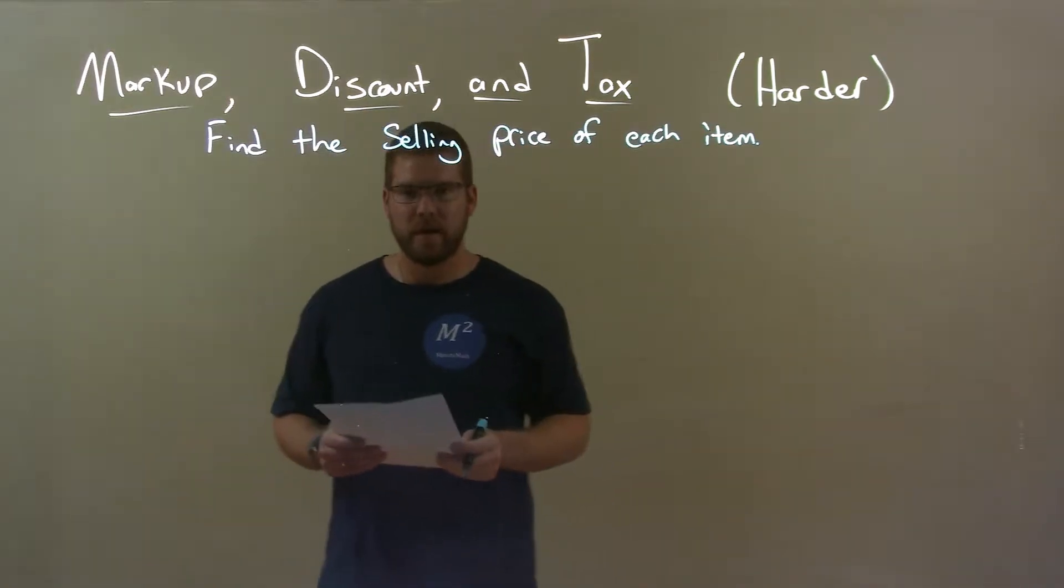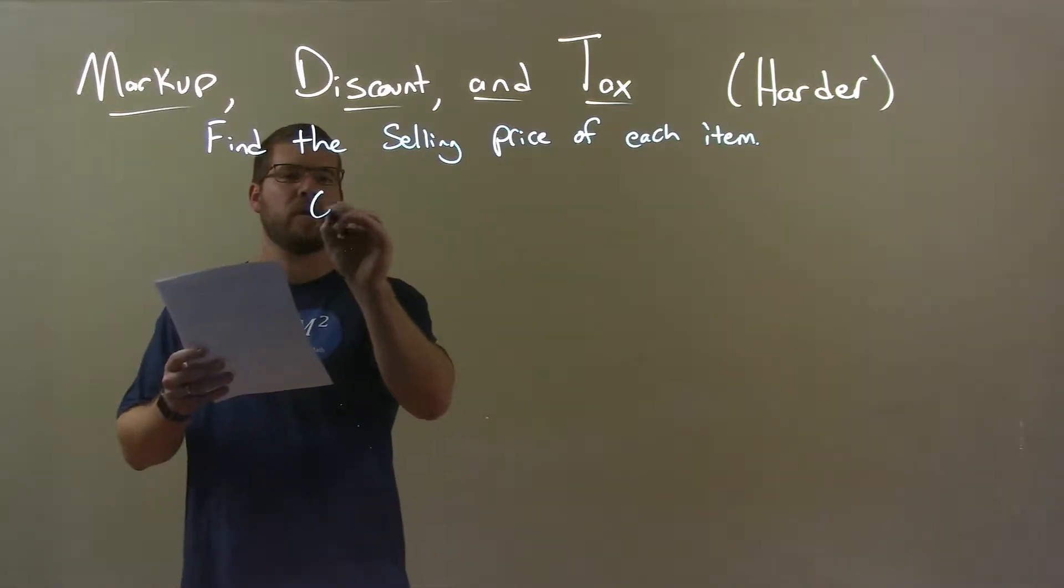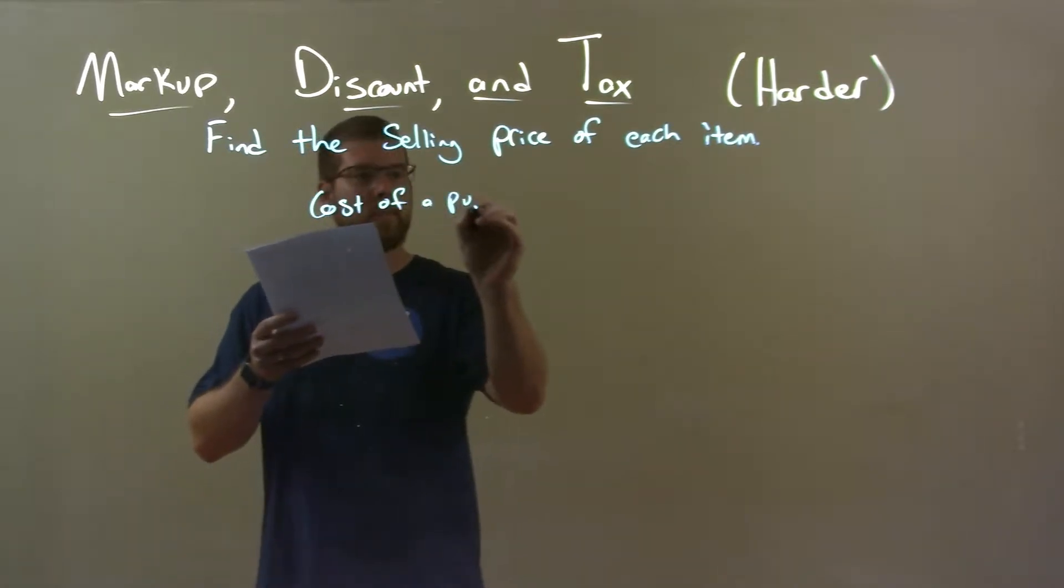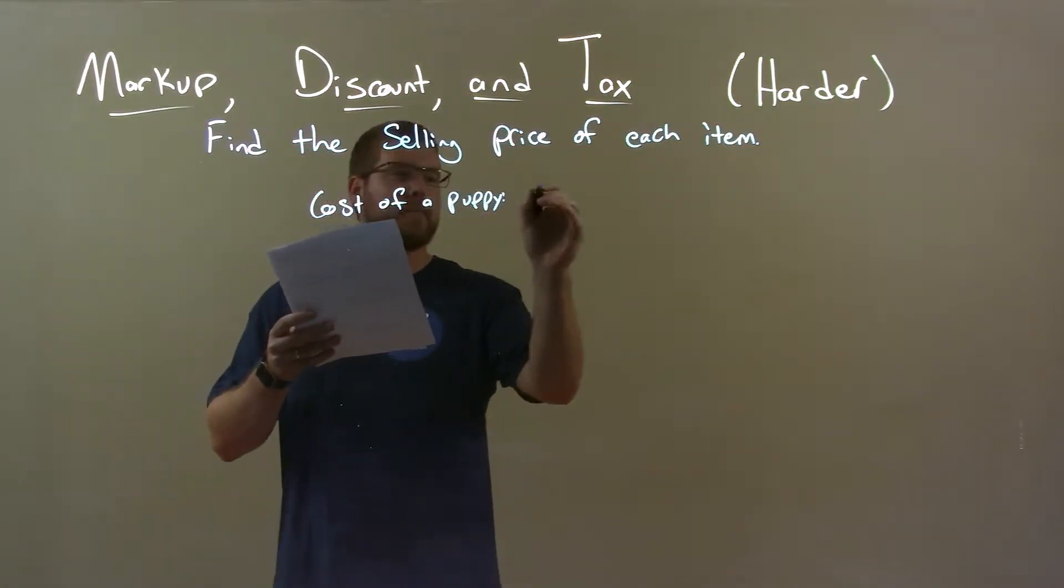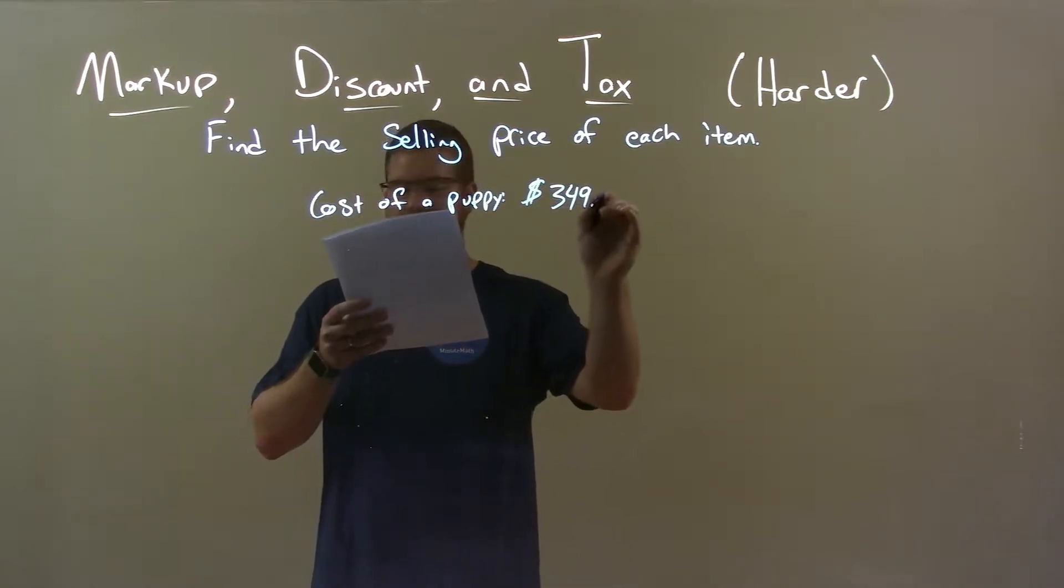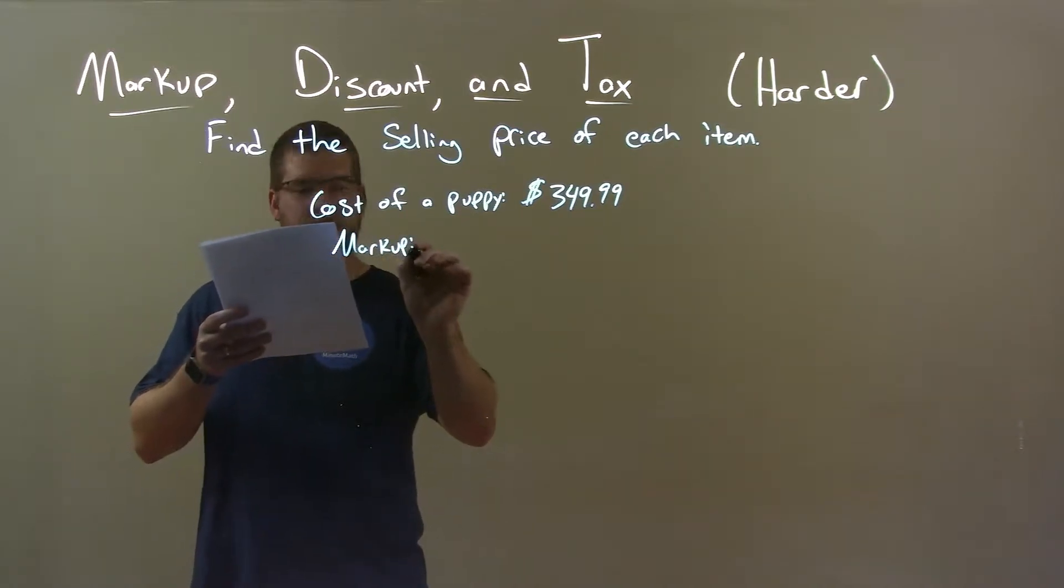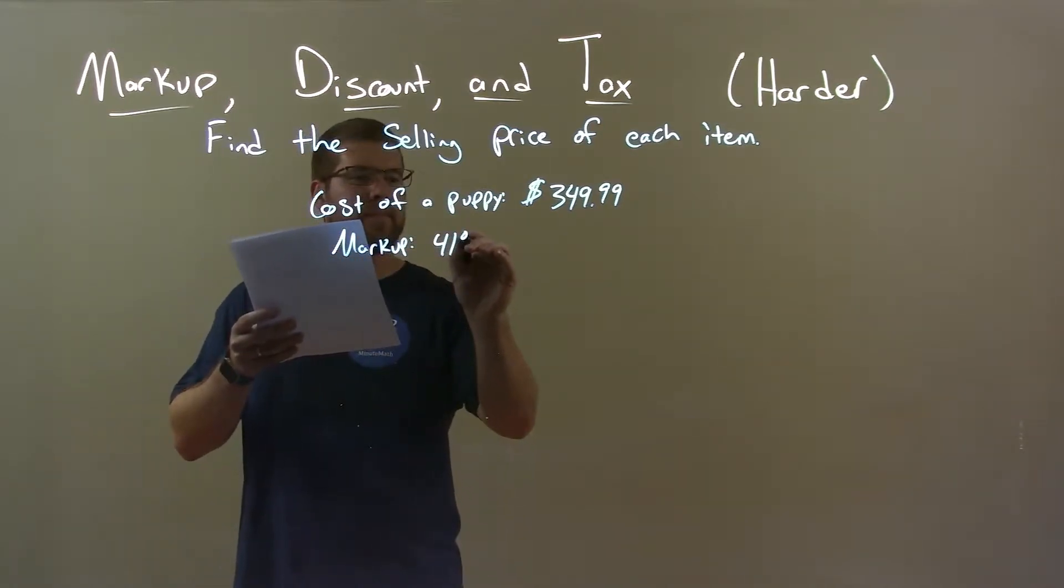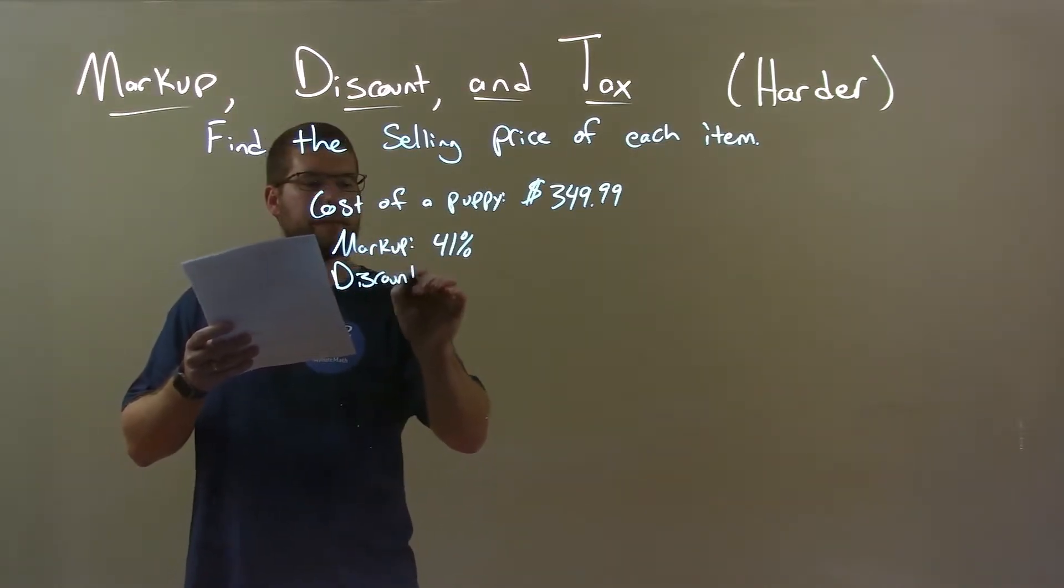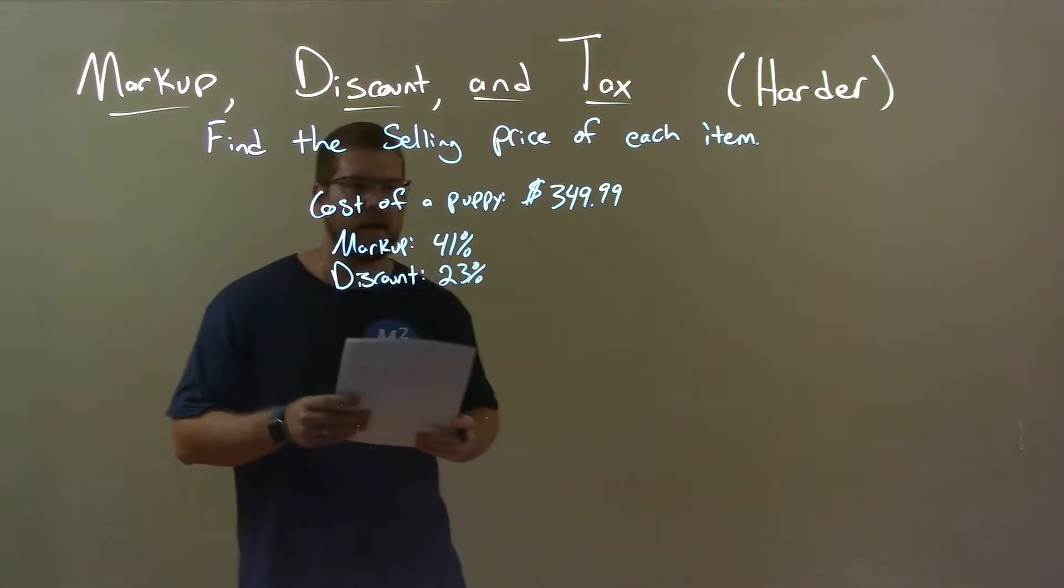Find the selling price of each item. If I was given this item, the cost of a puppy—it better be a cute puppy. Like I said, it doesn't matter, all puppies are cute—is $349.99. Its markup is 41% and its discount is 23%.